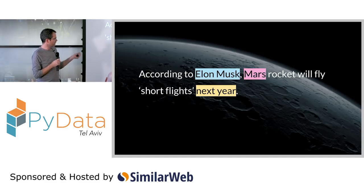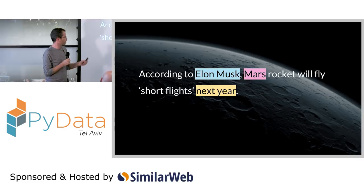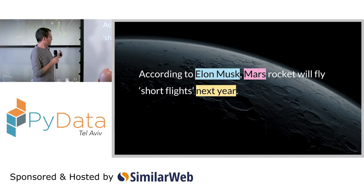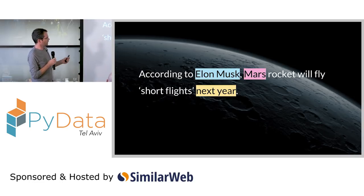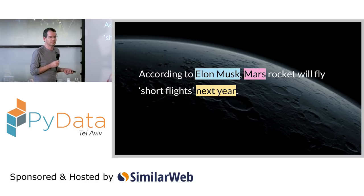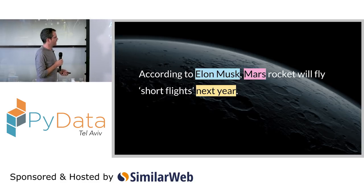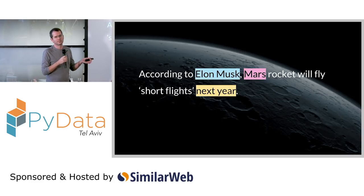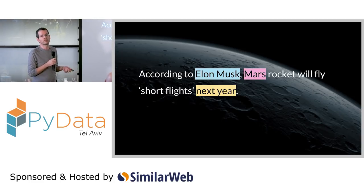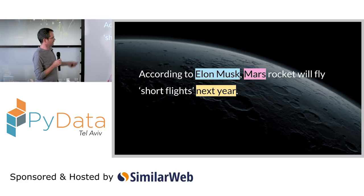Here's an example: 'According to Elon Musk, Mars rocket will fly short flights next year.' Elon Musk is a person, Mars is a location, and next year is a date entity. So we have a few entities here, and this is the kind of result we expect to see from a named entity recognizer given this text.